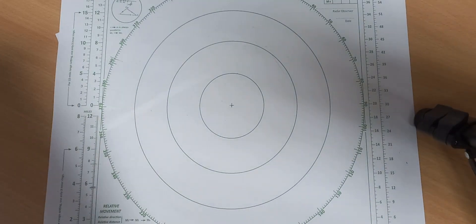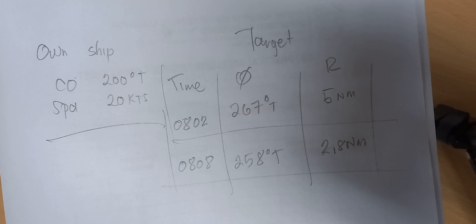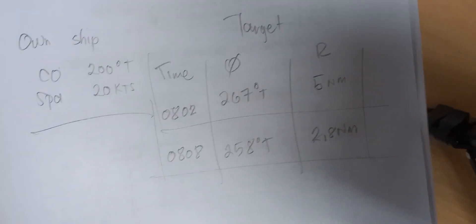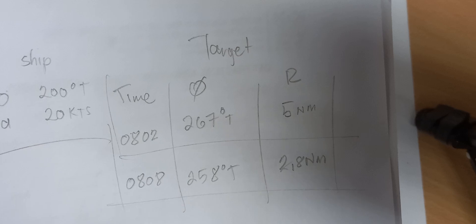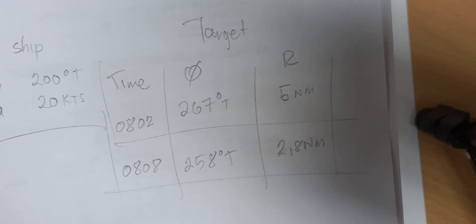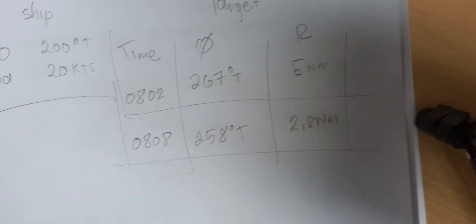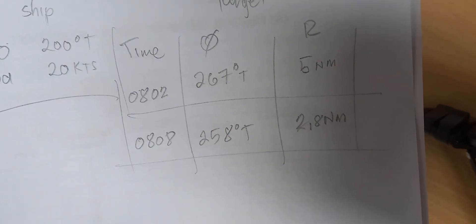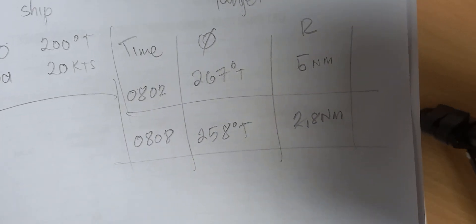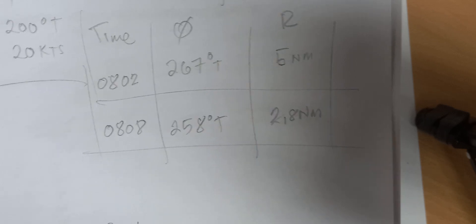For our next scenario, we have our own ship course 200 degrees, speed of 20 knots, with a target observation at 0802 hours with a bearing of 267 degrees, range 5 nautical miles. And at 0808 hours, the bearing is at 258 degrees with a range of 2.8 nautical miles.